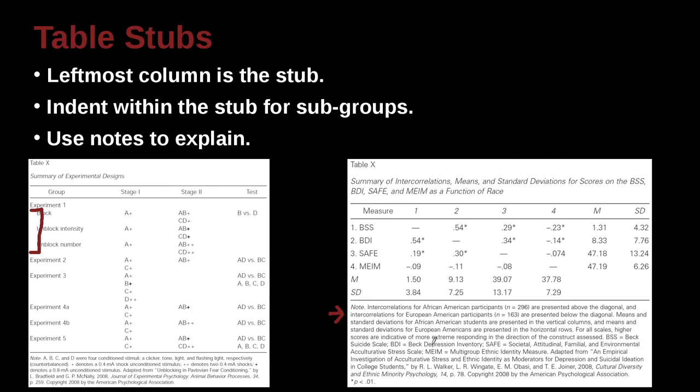One thing that this note is doing is you can see down in here like MEIM, and here is MEIM, and BDI, and here is BDI. So what's this doing? Well, BDI is Beck Depression Inventory. And MEIM is Multi Group Ethnic Identity Measure.